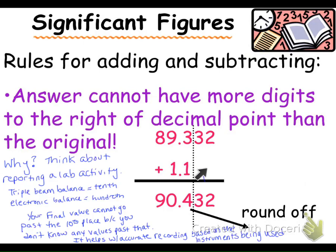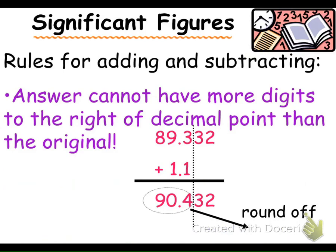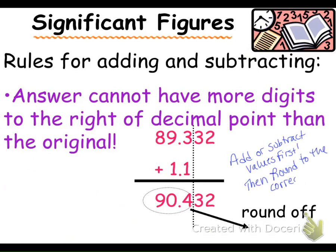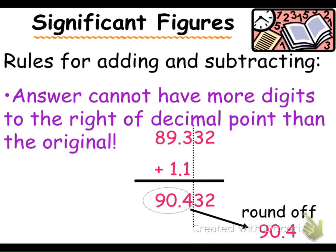That's why significant figures are important. When dealing with significant figures, you always want to do all the math first before you round — don't apply significant figures before you start. So in this case, I would do all of my math and get 90.432 as my first answer. When reporting it to the correct number of sig figs, I round so that 90.4 is how I would record that answer — that 3 is not going to cause that 4 to move up. So 90.4 is the correct answer.